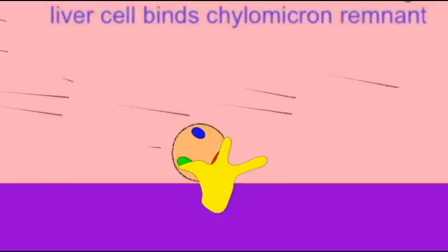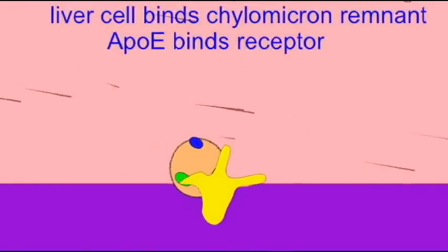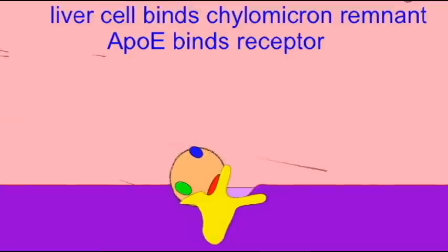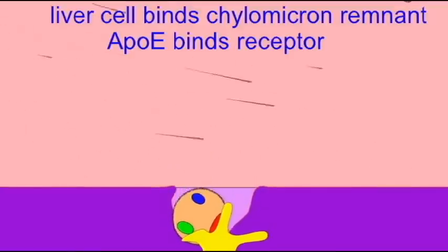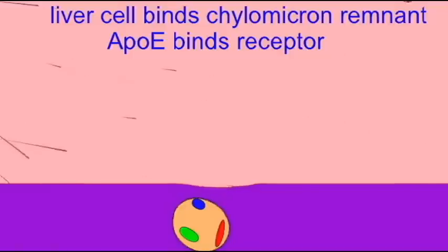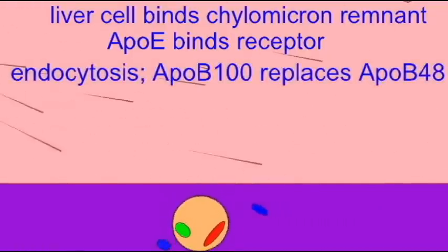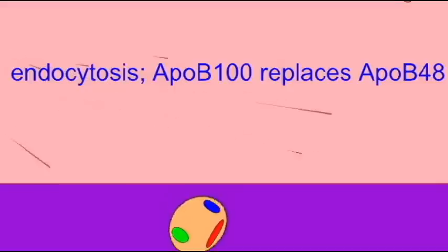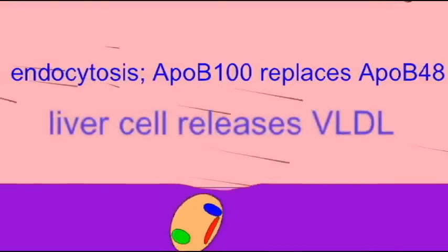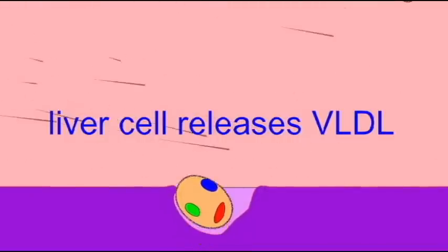Eventually, the remnant of the chylomicron reaches the liver, where it binds to receptors on liver cells and is absorbed. The liver then repackages these lipids, changing the ApoB48 to ApoB100. The particle now created is known as a VLDL, a very low-density lipoprotein, and the liver cell releases this VLDL into the blood.